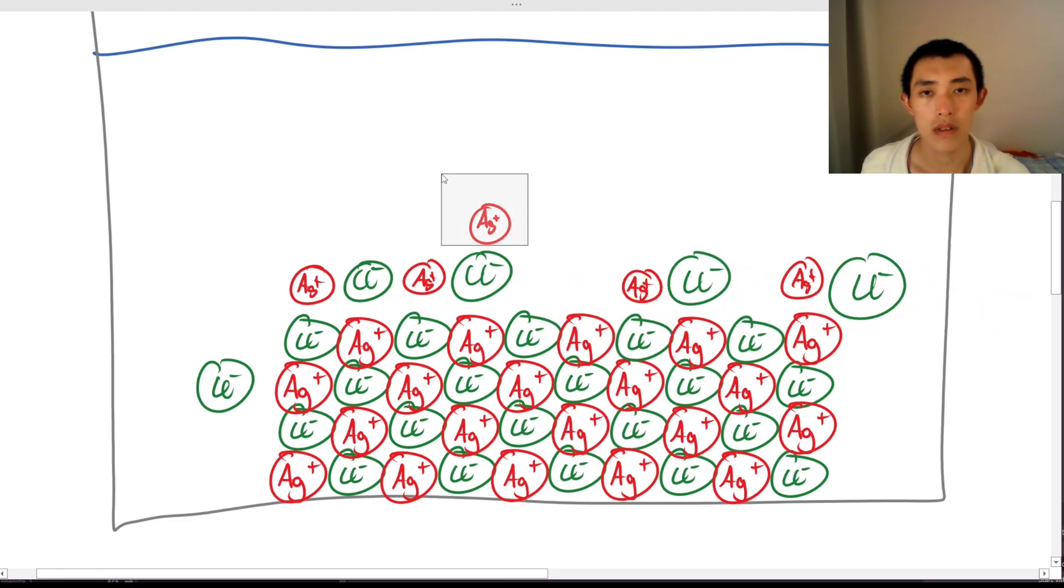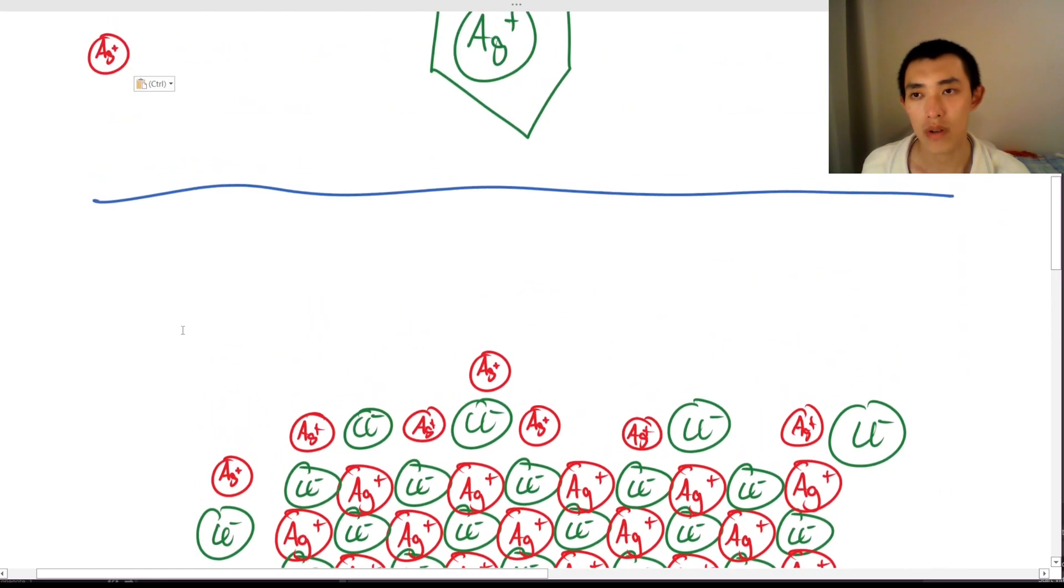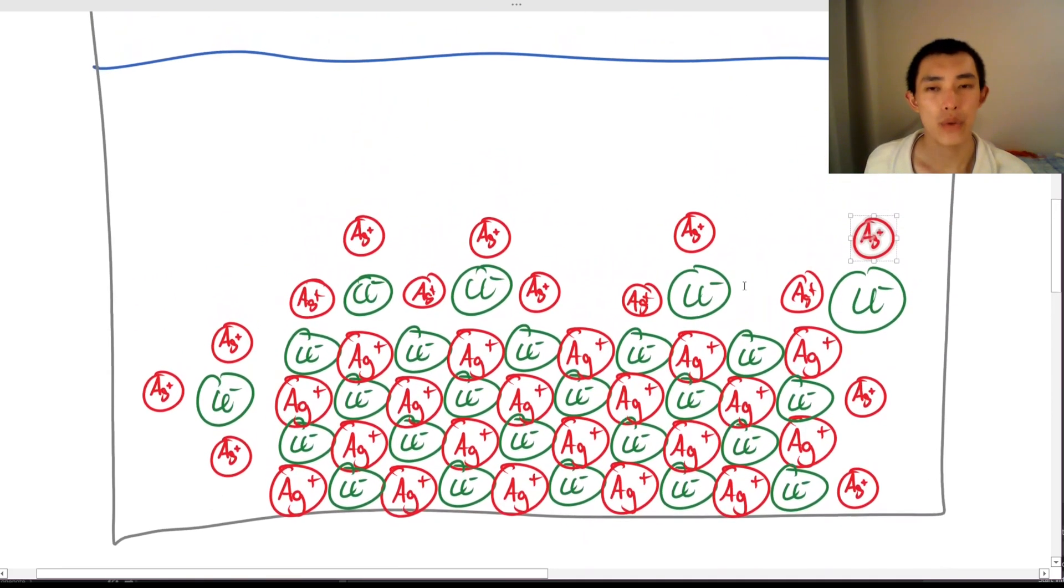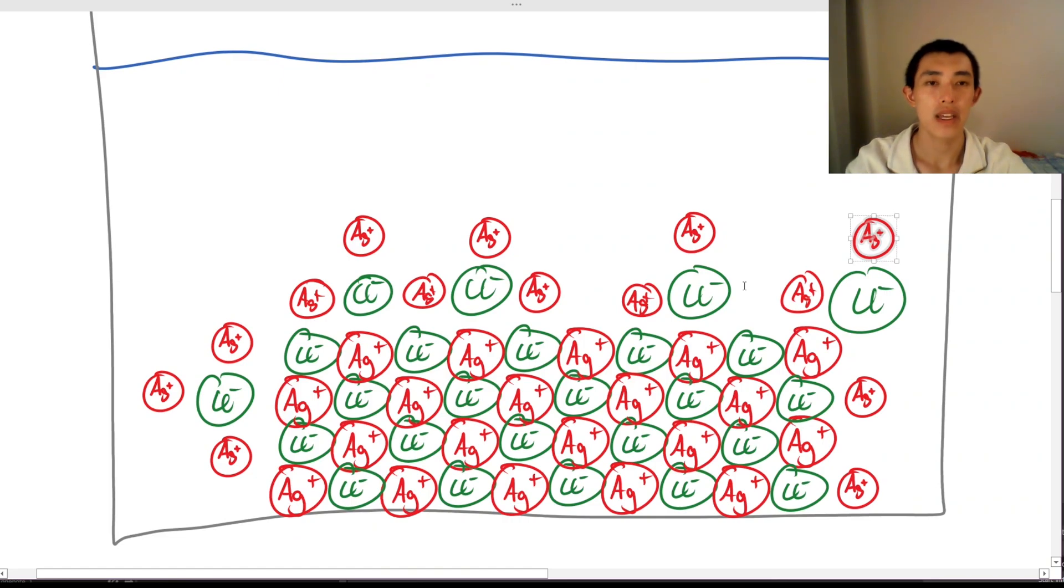It'll congregate... It'll do the same thing where it kind of just hovers around. And so, you know, you're going to have a lot of... As you keep adding in silver, it's going to keep kind of hovering around all of your chlorines, until what we see is that the whole thing is going to be covered in the silver. And now you see that the whole surface is covered in silver.